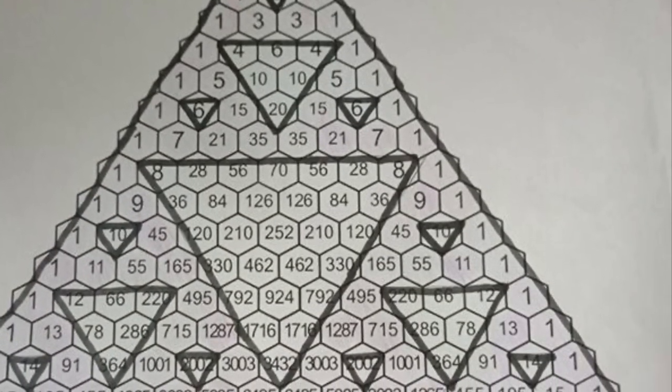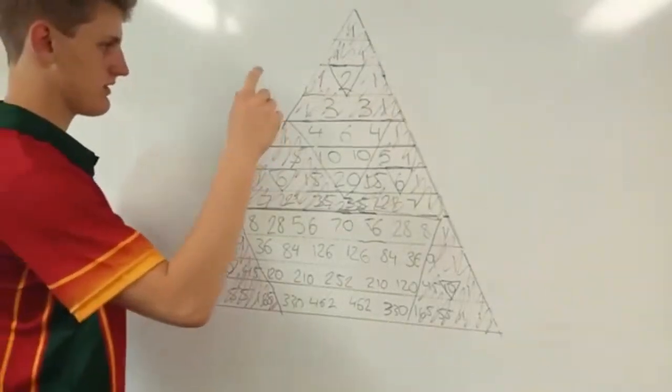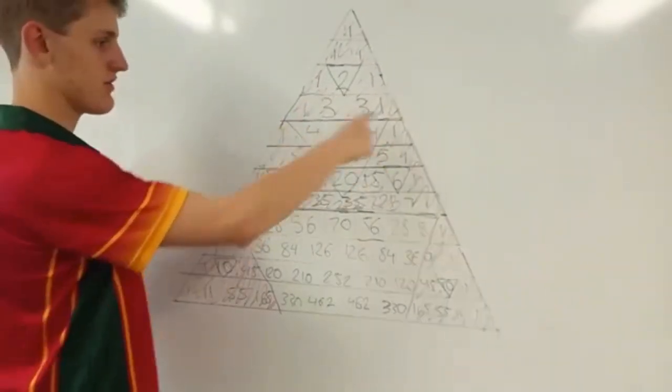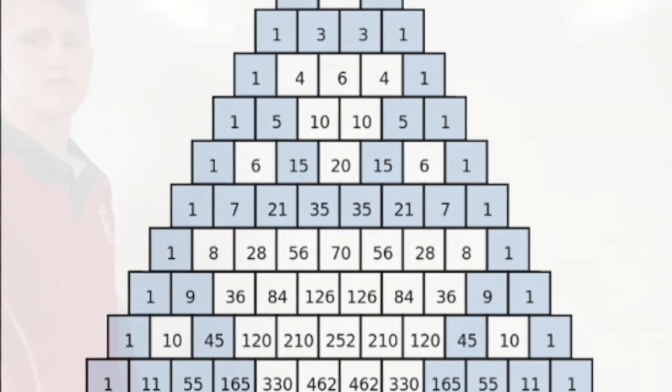Here we can find how the Sierpinski Triangle can be found within Pascal's Triangle. You color all the even numbers, draw triangles around them, then color out all of the odd numbers. This will form Sierpinski's Triangle.